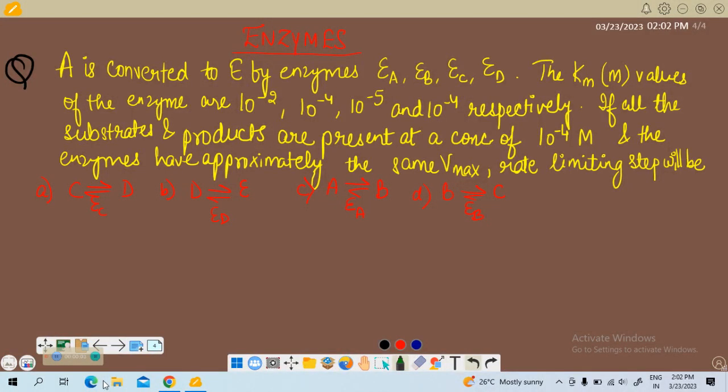Hello, so this is the MCQ on enzyme. A is converted to E by enzymes EA, EB, EC, ED. The Km, Michaelis constant Km values of the enzyme are 10 raised to power minus 2, 10 raised to power minus 4, 10 raised to power minus 5, and 10 raised to power minus 4 respectively.